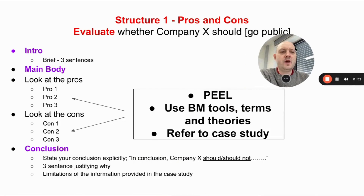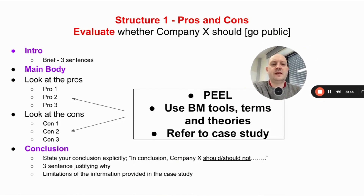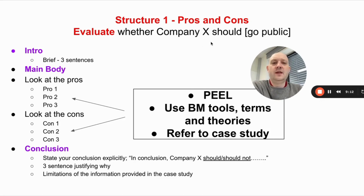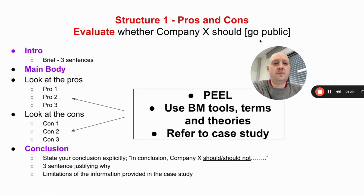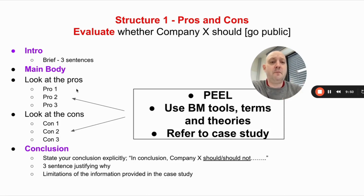Let's look at some example structures. Structure one is the pros and cons essay. For example: 'Evaluate whether company X should go public' — a yes or no decision. Start with a brief introduction, just three sentences introducing the issue. In the main body, look at pros and cons of going public. Aim for six PEEL paragraphs: pro one, pro two, pro three, con one, con two, con three. This ensures balance by looking at both sides of the argument.